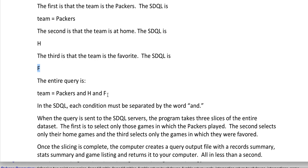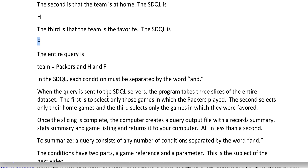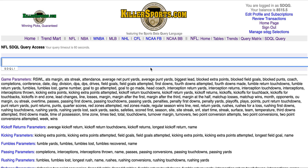When you send this query to the remote servers, the computer first takes all the games in which the Packers played, then all the games in which the Packers played at home, then of those it takes the games in which the Packers were the favorite. When all three conditions are met, it takes those games, creates a query output file with a record summary, stats summary, and game listing, then sends it back to your computer — all in less than a second.